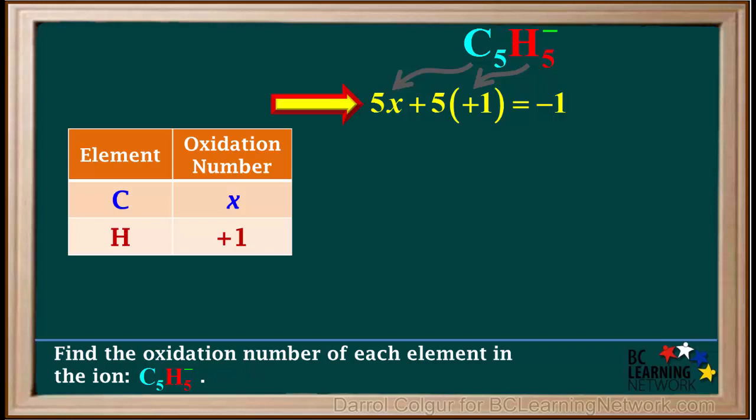We can solve for X in this equation to find the oxidation number of carbon. So we write 5X plus 5 equals negative one. Subtracting five from both sides gives us 5X equals negative one minus five, which equals negative six.